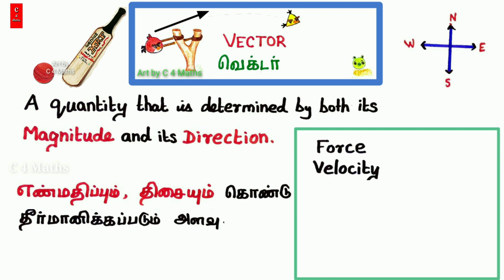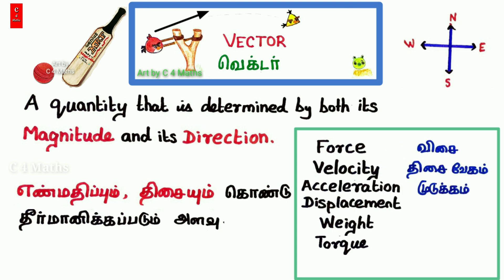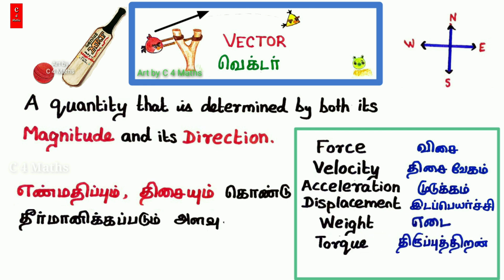Examples of vector quantities include: force, velocity, acceleration, displacement, weight, and torque. These quantities all have both a numerical value and a direction, and that is what makes them vector quantities.